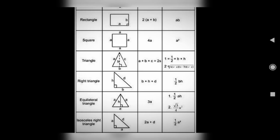Isosceles right triangle: perimeter is 2A plus D and area is half into A square.